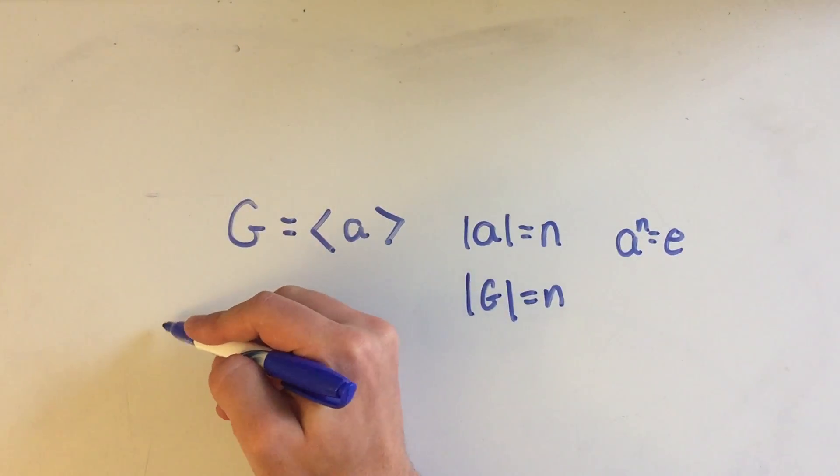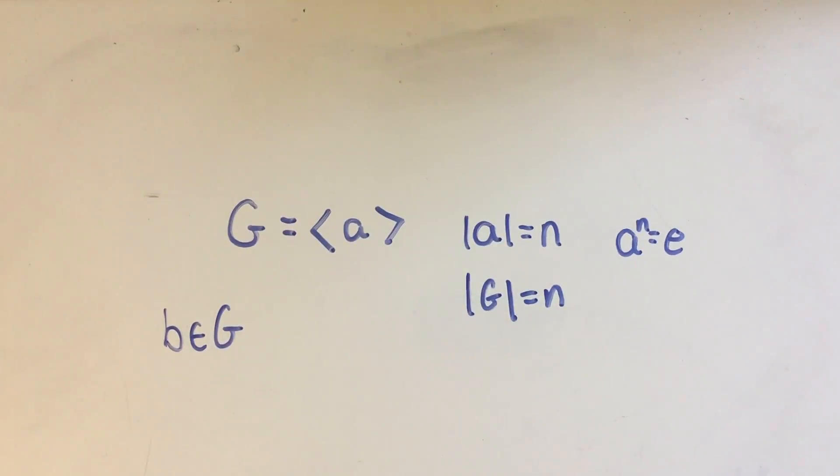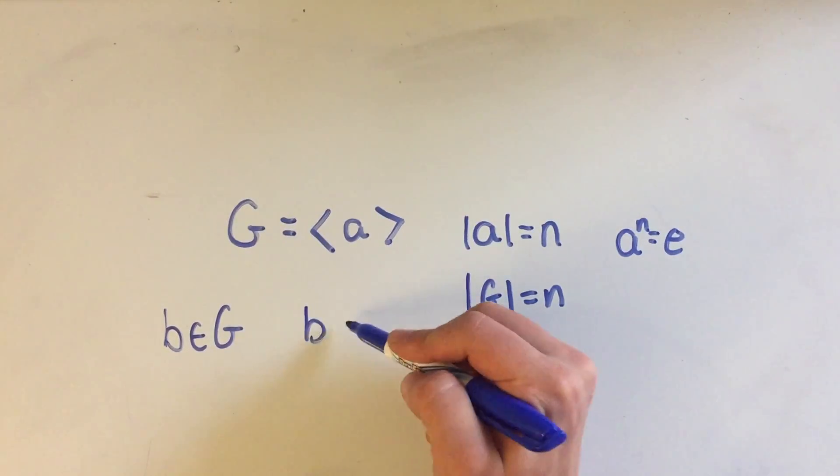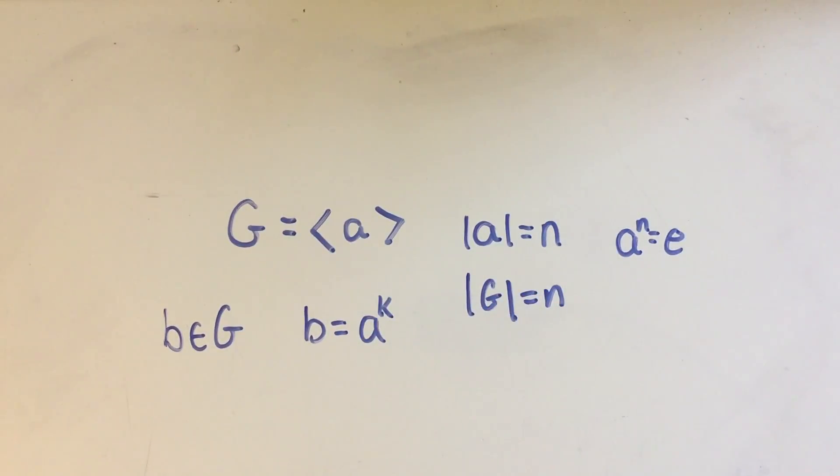So let's just take any old element in G. We'll say B. Take an element B in G. Well, since B is in G and G is cyclic, I know that B has to be some power of A.